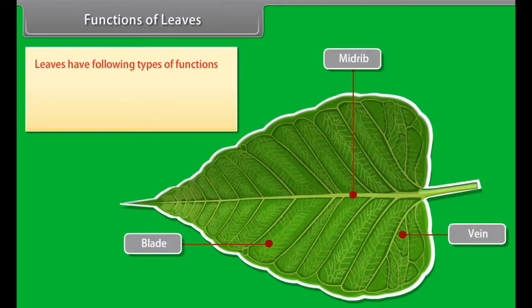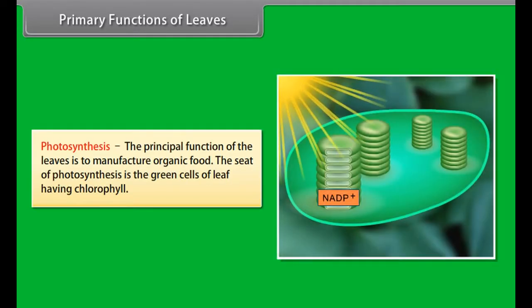Tendril: Tendrils are thread-like green structures which are sensitive to touch and are capable of coiling around the support. Examples include Pisum sativum and Smilax gloriosa.